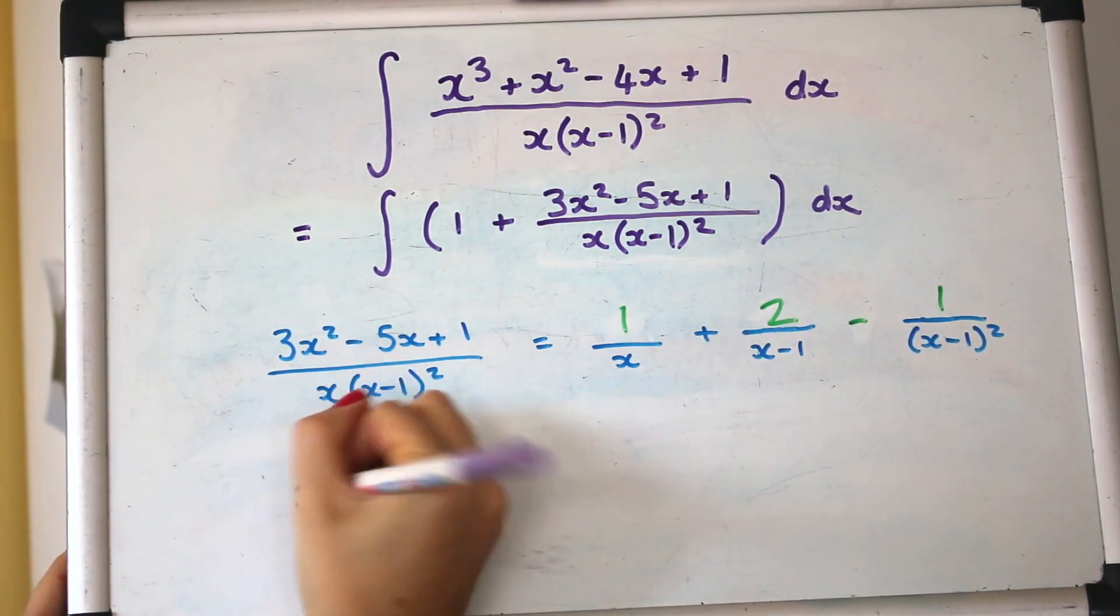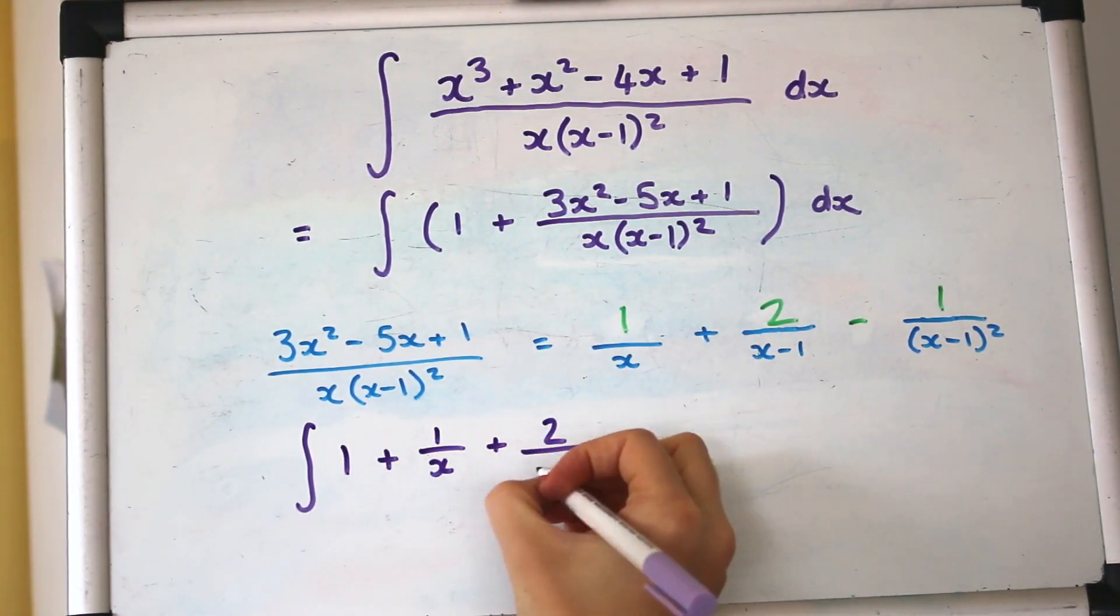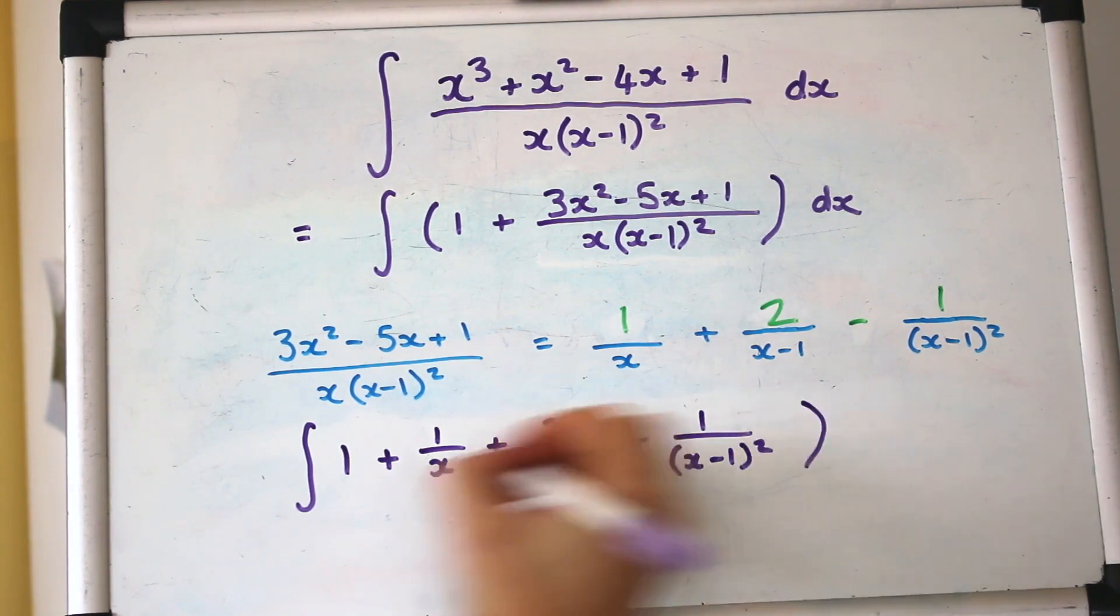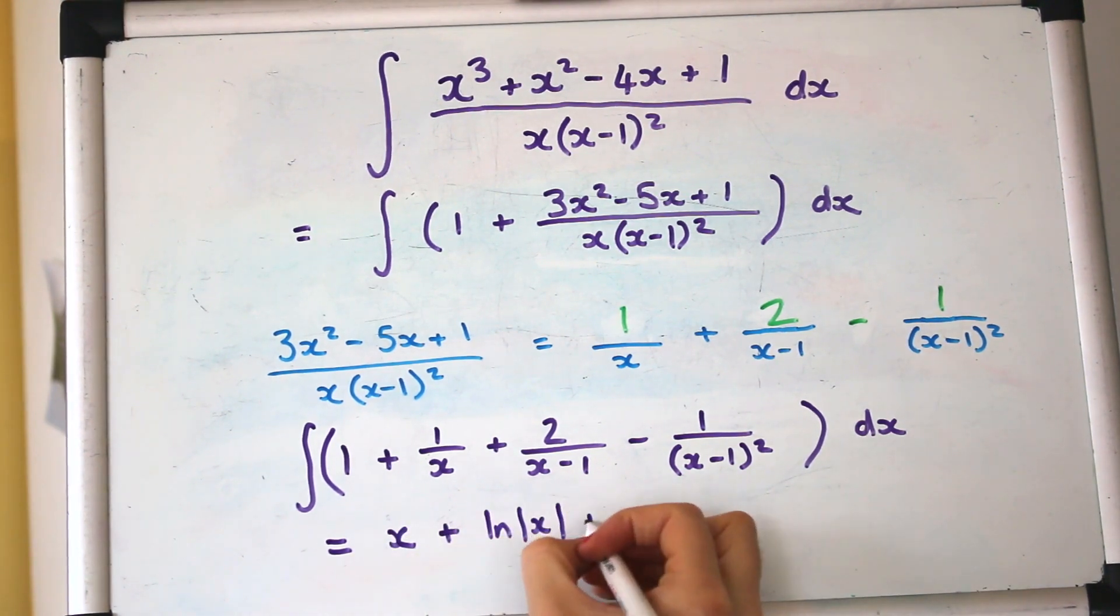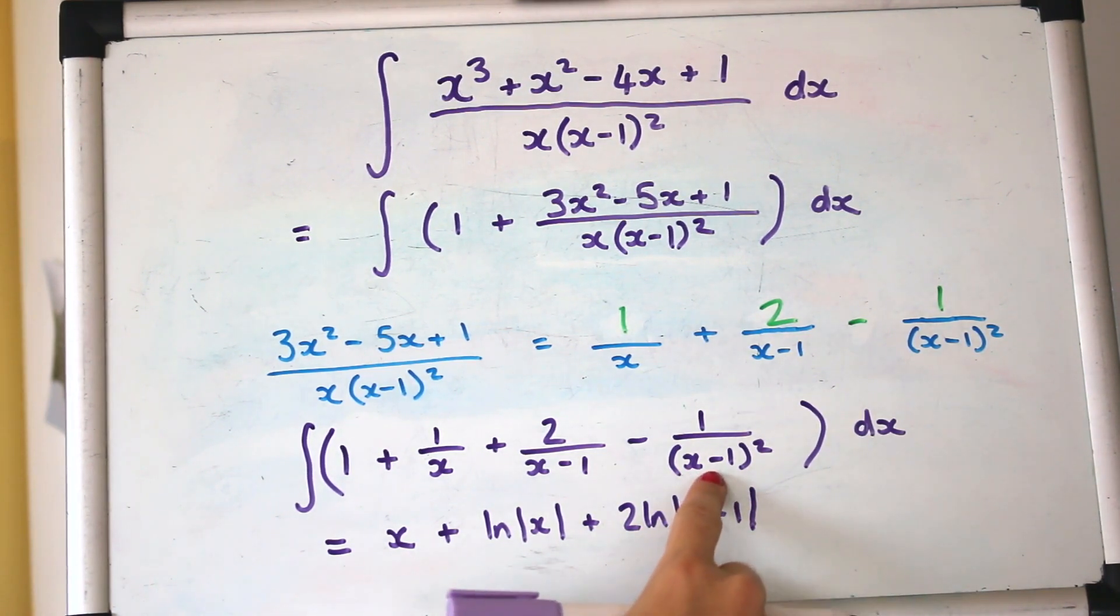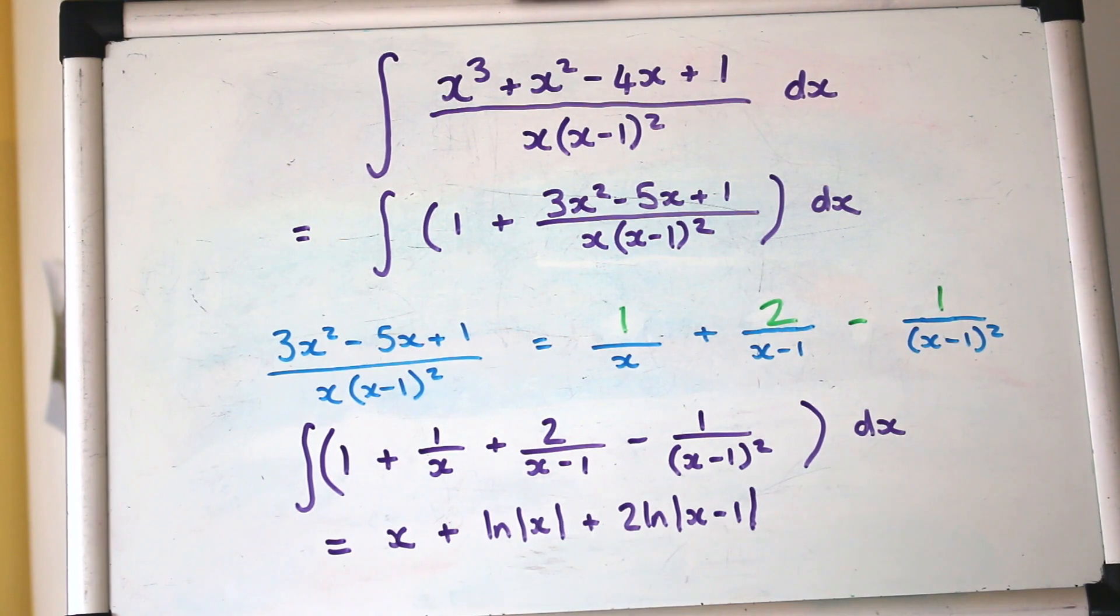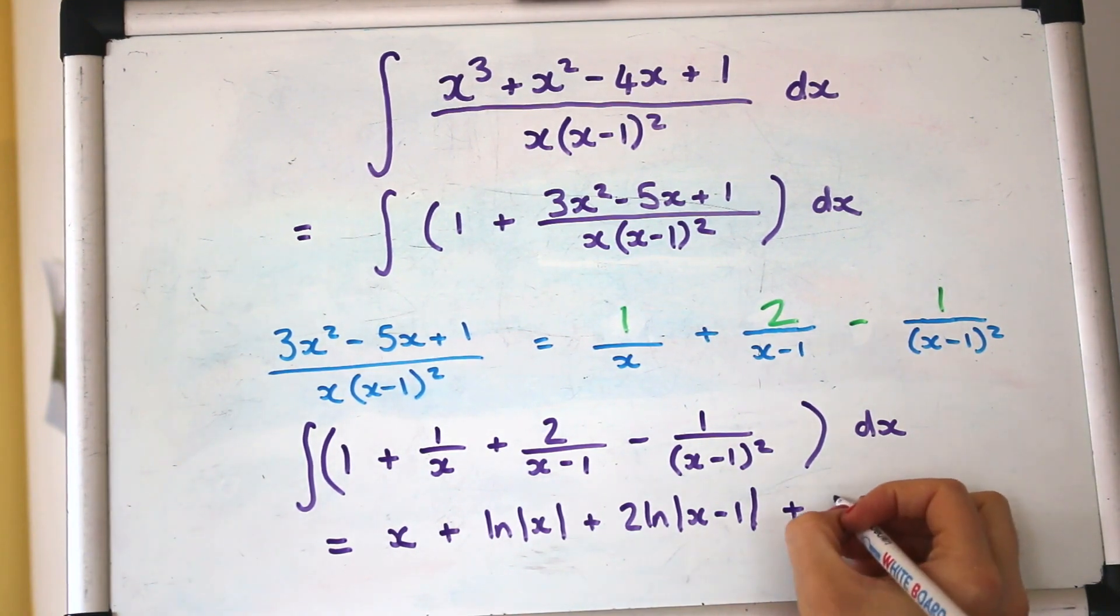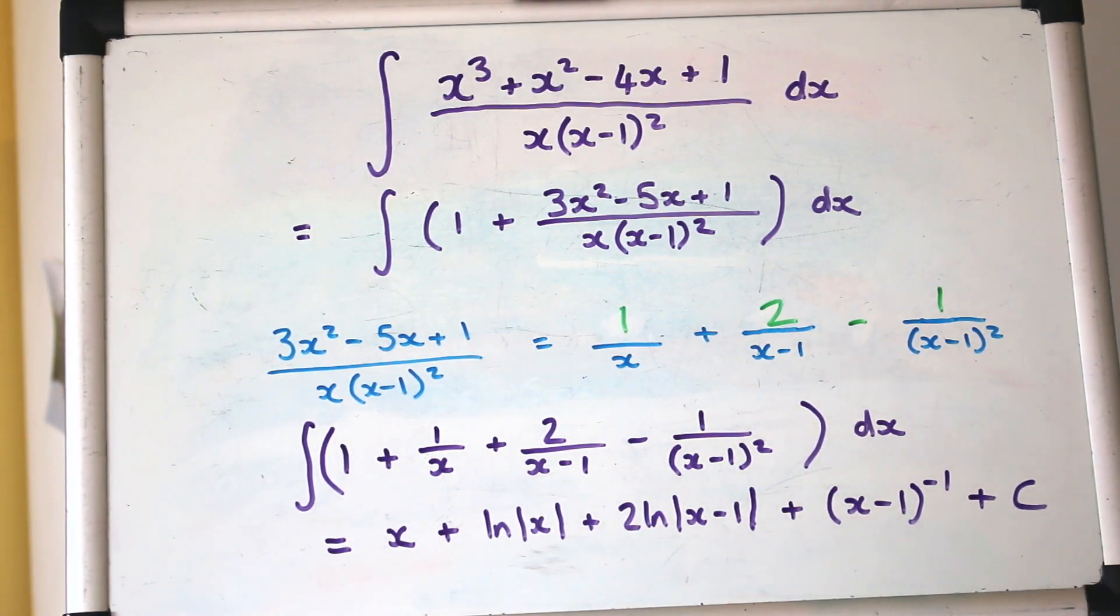Okay, so now we can write the integral with all that simplified. And hopefully we can now integrate that. That last one, just beware it's not a log because it's got a power on the denominator, so you need to do a reverse chain roll, have a go, and plus C because it's indefinite.